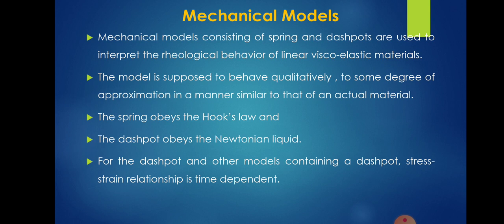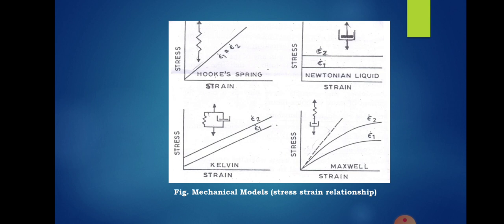Mechanical models. There are various models which are designed in order to represent the behavior of the biological material under applied load. Mechanical models consisting of spring and dashboards are used to interpret the rheological behavior of all linear viscoelastic materials. The model is supposed to behave qualitatively to some degree of approximation in a manner similar to that of an actual material. Though the model consists of a spring and dashboards, the spring obeys the Hooke's law and the dashboards obeys the Newtonian liquid. Dashboard is nothing but a twist turn that moves in a cylinder in a to and fro direction. For the dashboards and other models containing a dashboards, stress-strain relation is time dependent. This particular figure shows the mechanical model, that is stress-strain relationship.